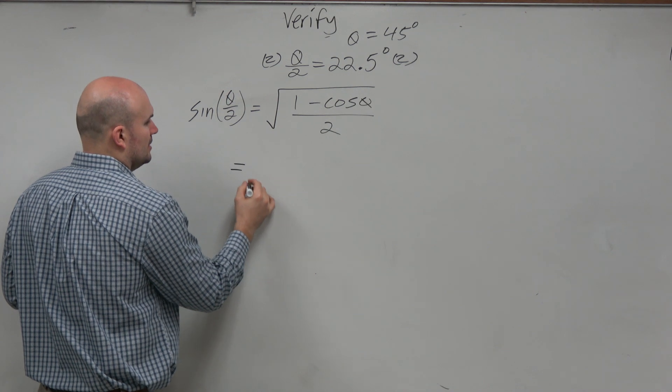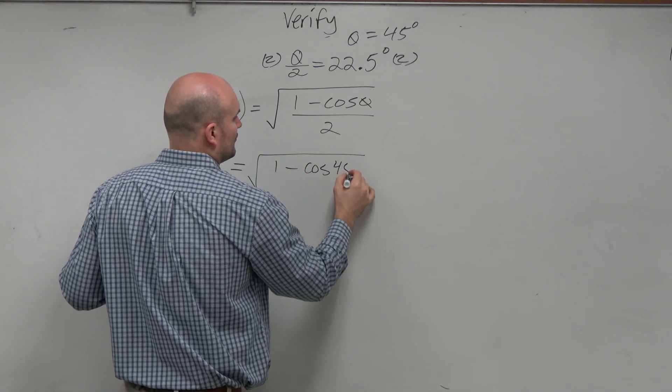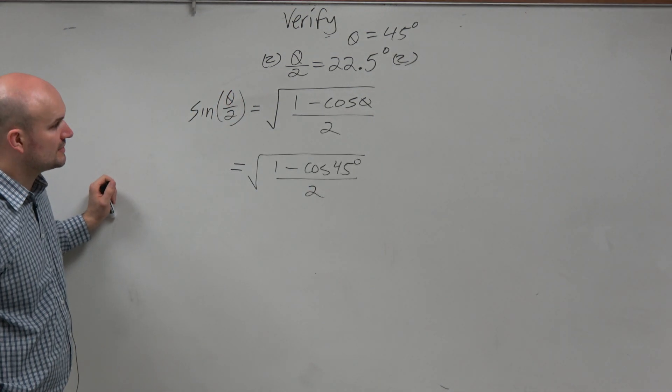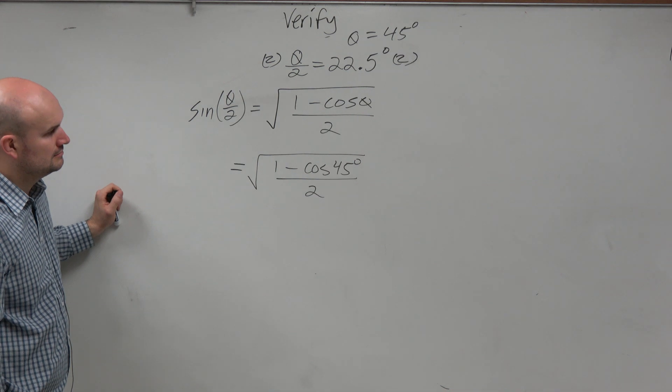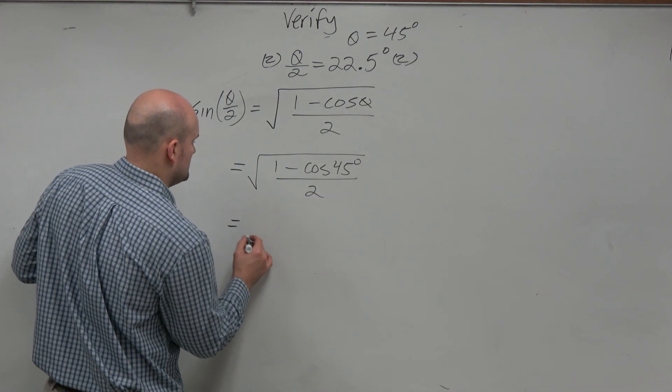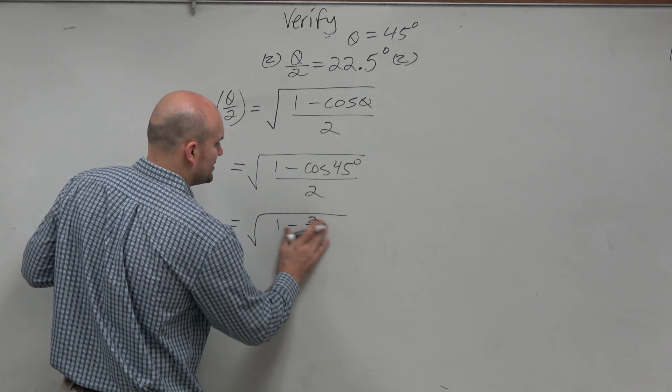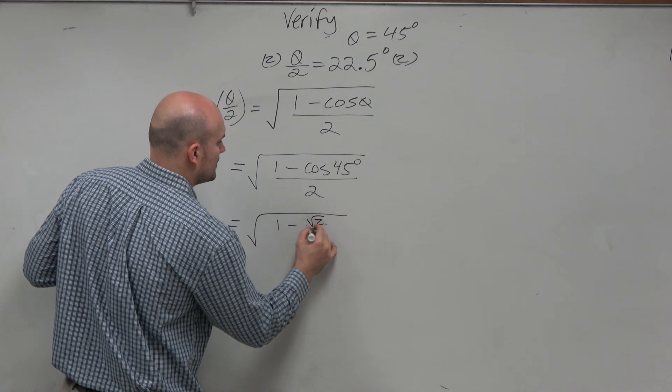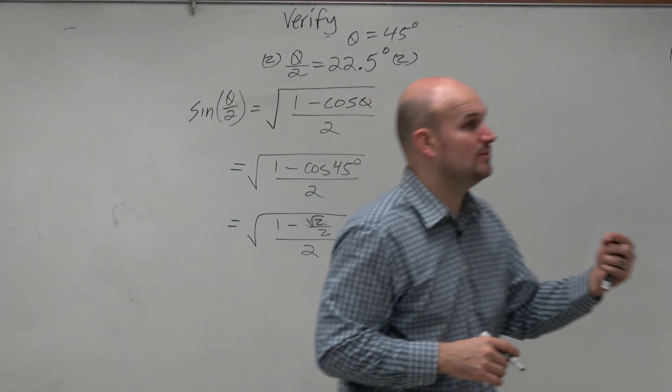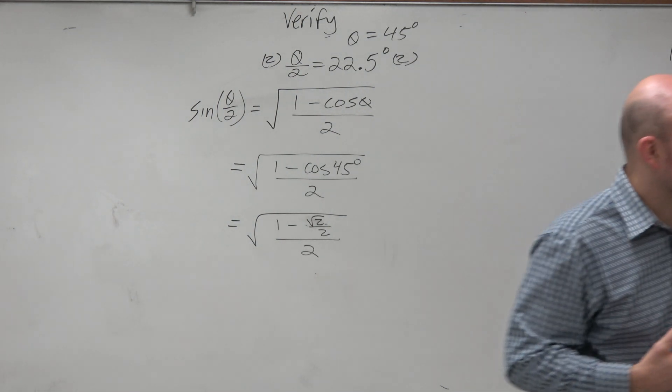So now we have this as 1 minus the cosine of 45 degrees all over 2. And now, can we evaluate the cosine of 45 degrees? Right? Yeah. So this becomes 1 minus square root of 2 over 2, divided by 2. And what do you know? Under the radical, we have a lovely what kind of fraction? Complex. Complex fraction.